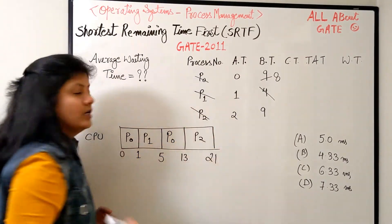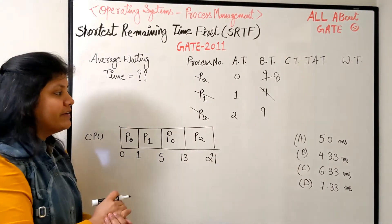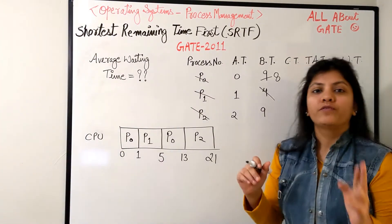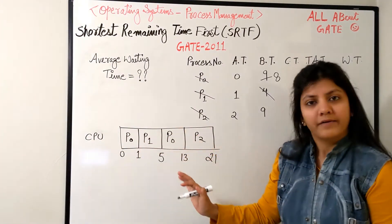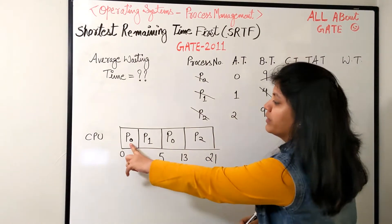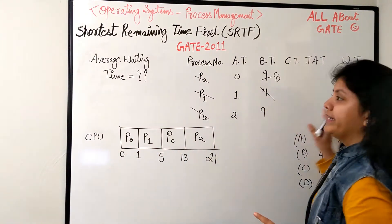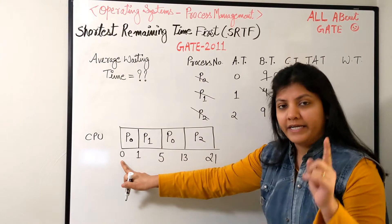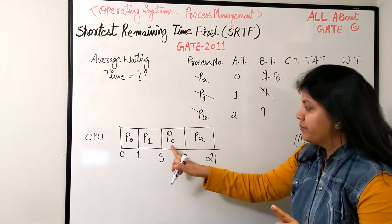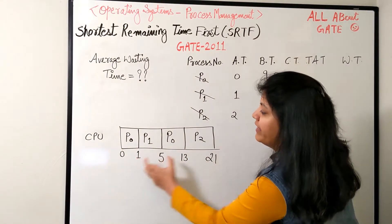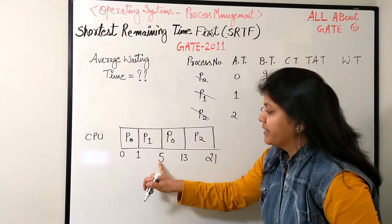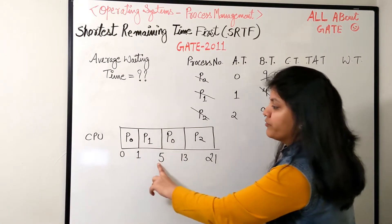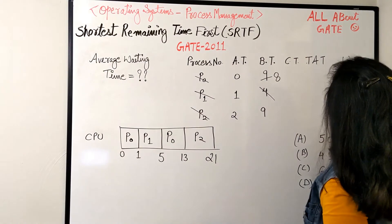All processes are scheduled. Now we find the average waiting time. There are two ways to find wait time - you can look at the Gantt chart directly. P0 came at time zero, was scheduled, then got a gap from 1 to 5 when it was scheduled again. So its waiting time is five minus one, which is four bursts of doing nothing but waiting.